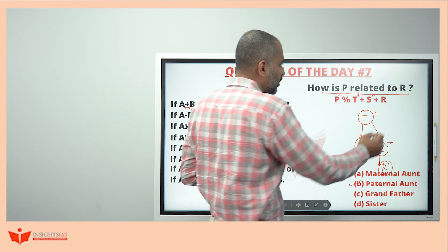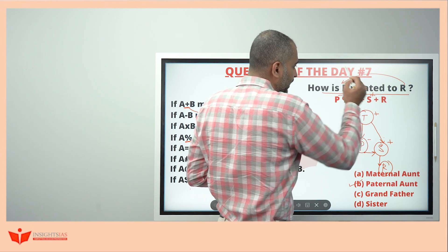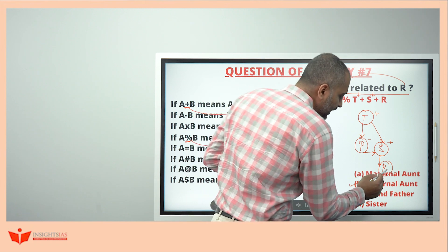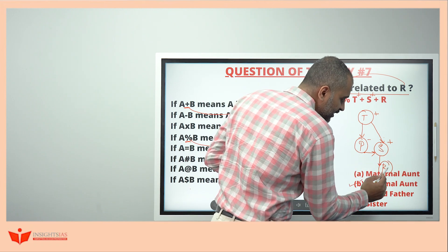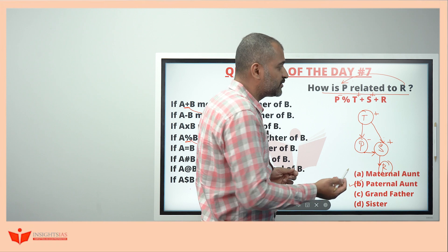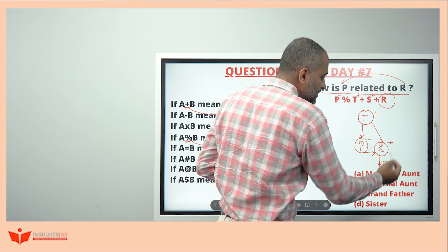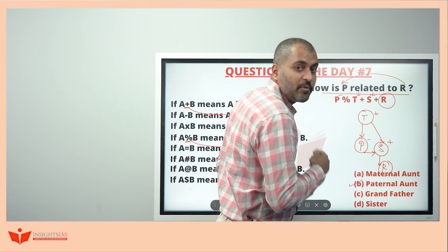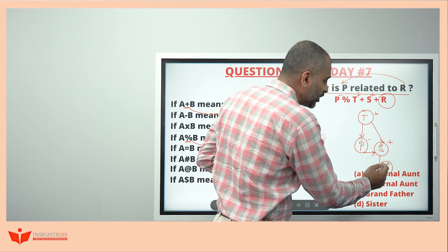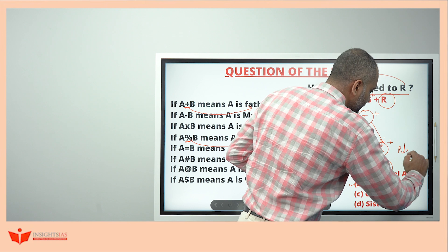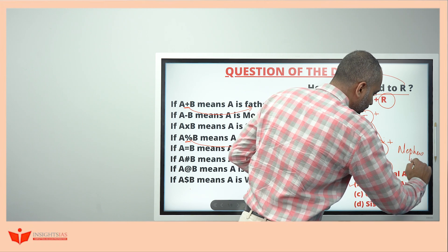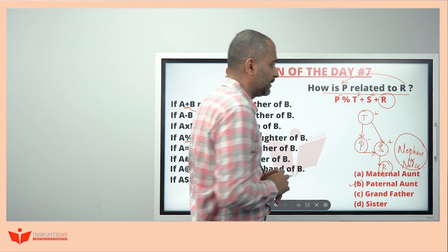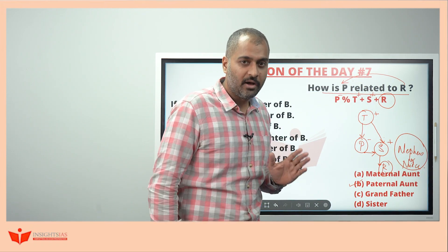If the question were in reverse order — how is R related to P? — then R is brother's son or daughter because we don't know the gender of R. Hence it can be brother's daughter or son, which means nephew or niece. But we are not sure because we don't know the gender of R.